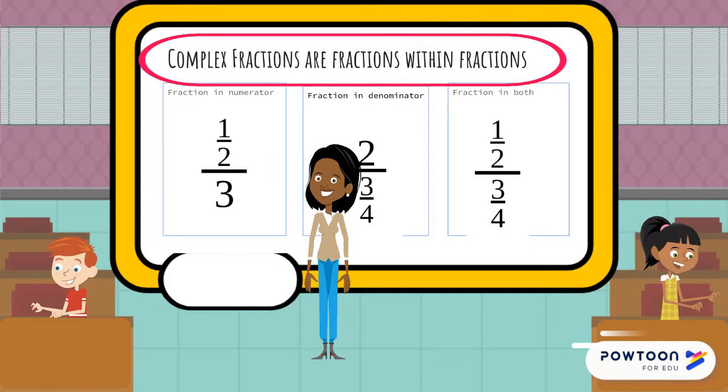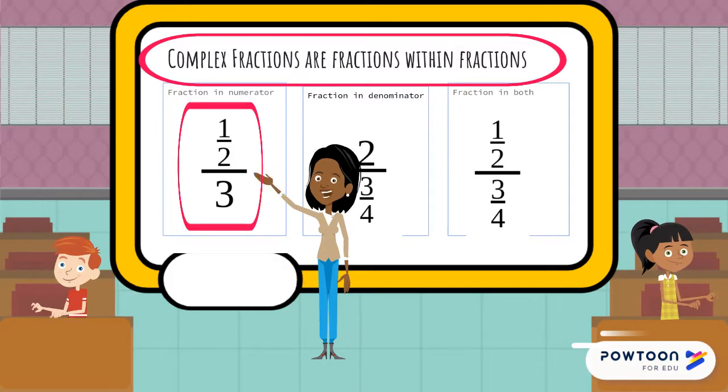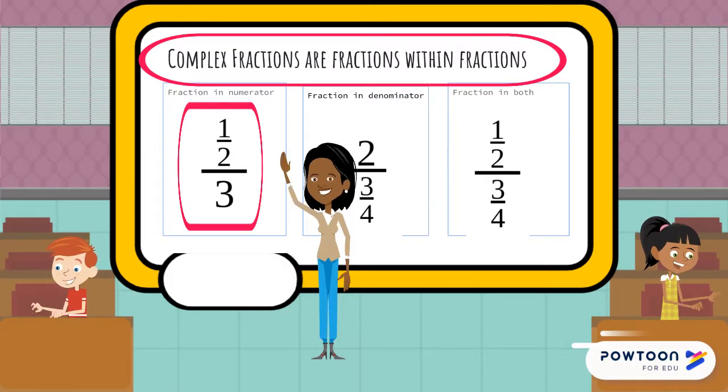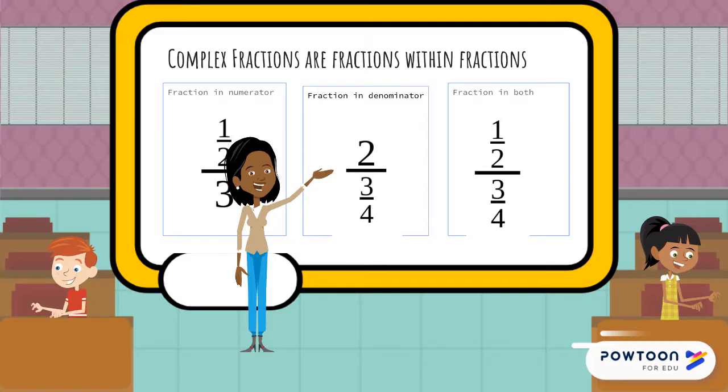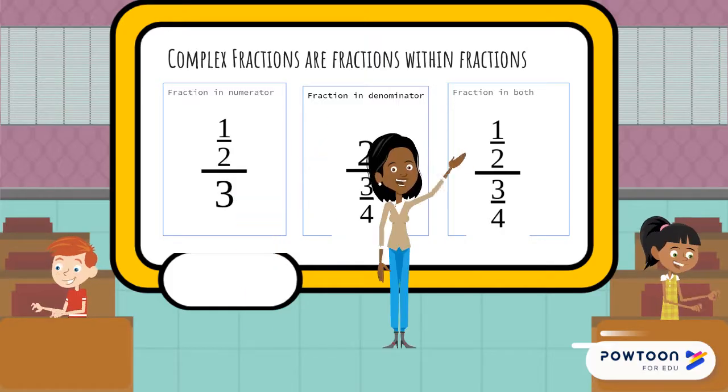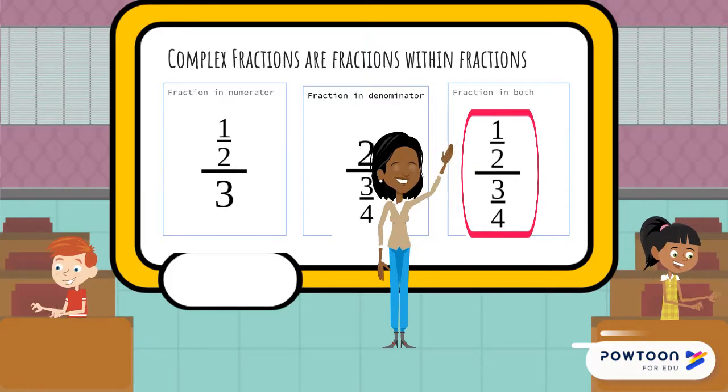You can have a fraction in the numerator, such as 1 half divided by 3. You can have a fraction in the denominator, such as 2 divided by 3 fourths. Or you can have a fraction in both the numerator and denominator, such as 1 half divided by 3 fourths.